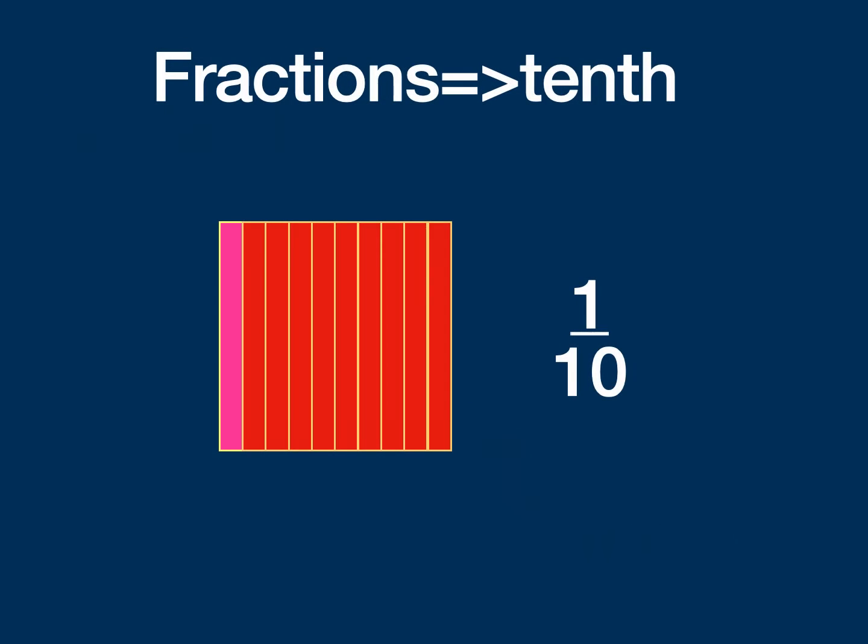So if we go back to what we're looking at before, this is one-tenth and we would write it 0.1. And that one represents one-tenth of a whole. If I've got three-tenths, then the decimal would be 0.3. And seven-tenths is 0.7. And you can see how this goes.